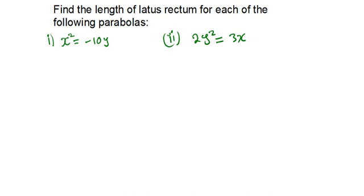We know the length of the latus rectum is the absolute value of 4p. From this equation we have, we need to find what p is, then multiply it by 4 and take the absolute value.